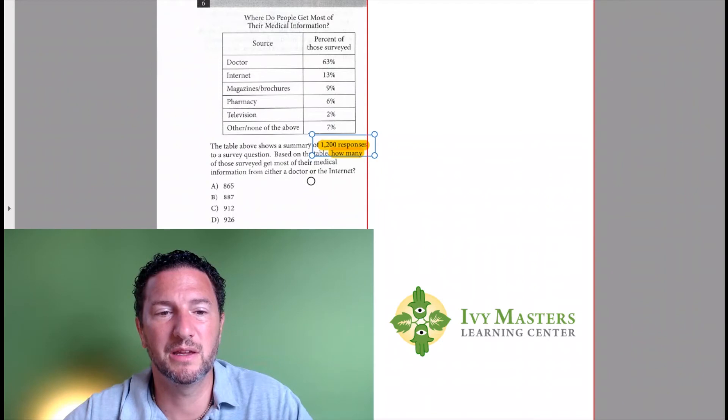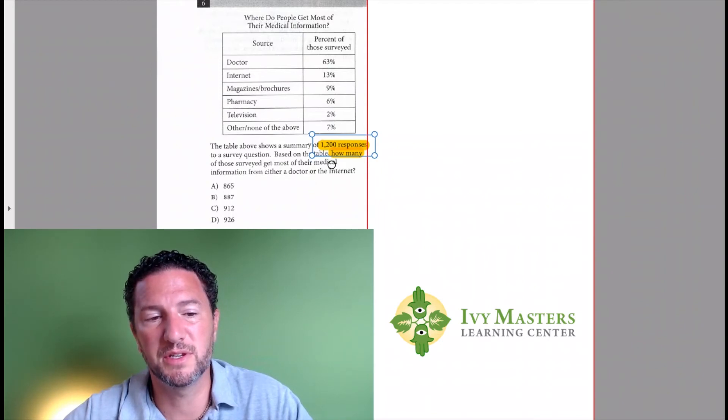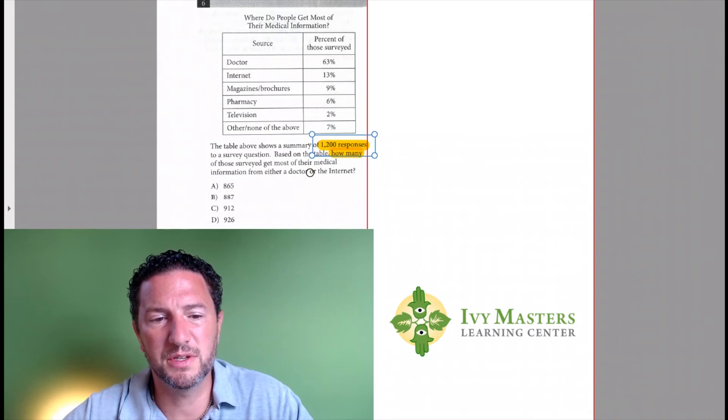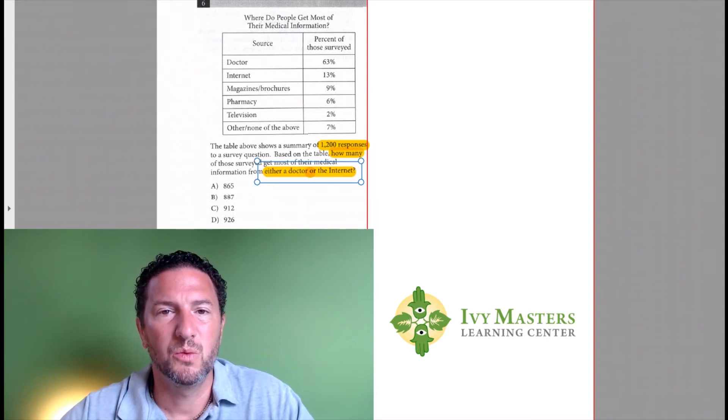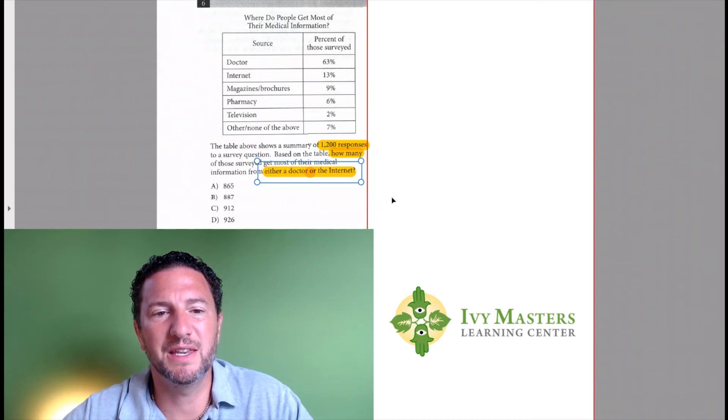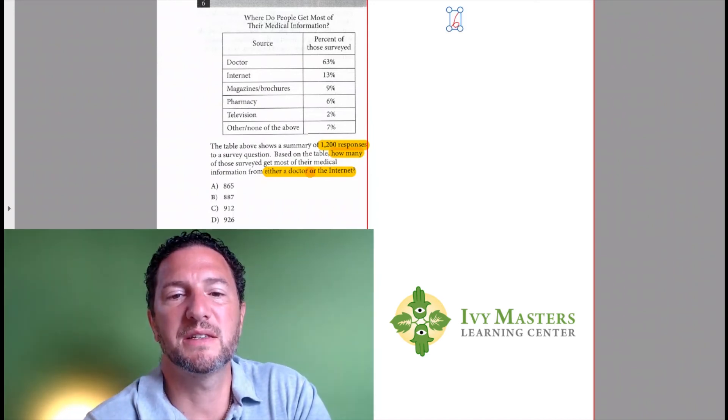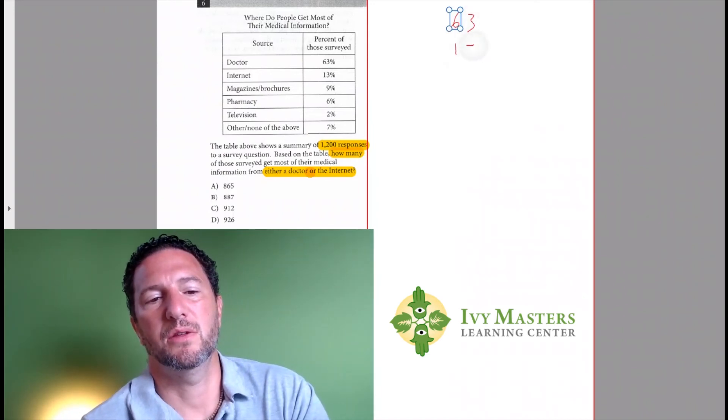You're multiplying by the decimal quote of a percent basically. And notice it's an 'or' statement—it's either a doctor or the internet. When it's either one or the other, you have to include both of them because if it's a doctor it counts and if it's the internet it counts. So the very first thing you have to do here is you have to add that 63 and that 13 percent.